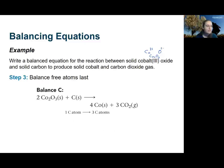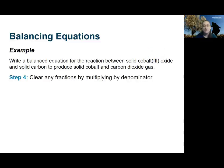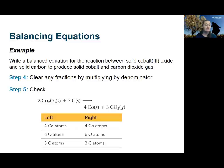The same balancing applies to carbon. I have one carbon atom on the reactant side and three on the product side, so I multiply the reactant side by three to balance the carbon atoms. At this point, if there were any fractions in the balanced equation we would need to multiply by the denominator to get whole numbers — this can easily happen when dealing with diatomic elements, as we'll see in the next example. Finally, we double-check: we have four cobalt atoms, six oxygen atoms, and three carbon atoms on both sides of the equation, so the equation is fully balanced.